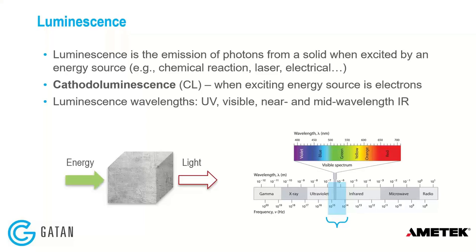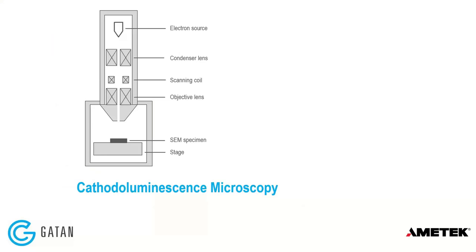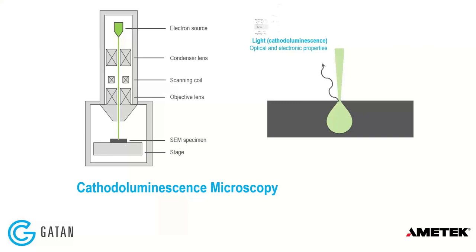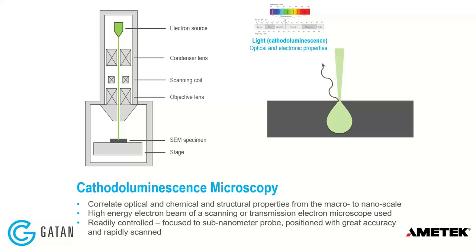Cathodoluminescence typically concerns itself from the UV into the near-mid wave IR. Here's a depiction of the electromagnetic spectrum with the region that CL is typically relevant highlighted. CL microscopy uses an electron microscope which impinges on a sample, creating what we call a generation volume, from which excited electrons in the sample drive a number of processes — including secondary electrons, backscattered electrons, and cathodoluminescence. It allows us to correlate optical, chemical, and structural properties from macro to nanoscale with very high spatial resolution.